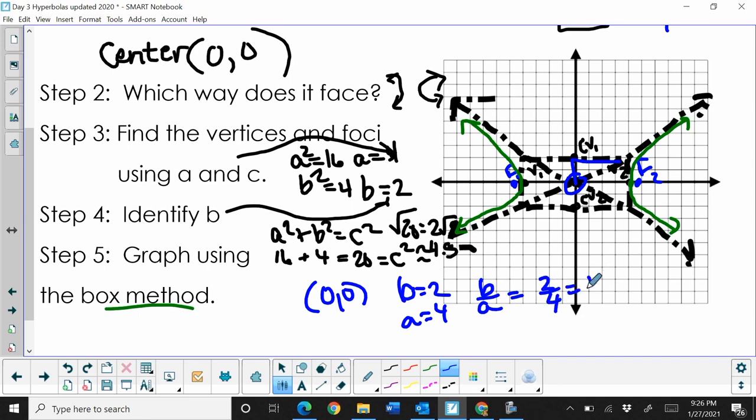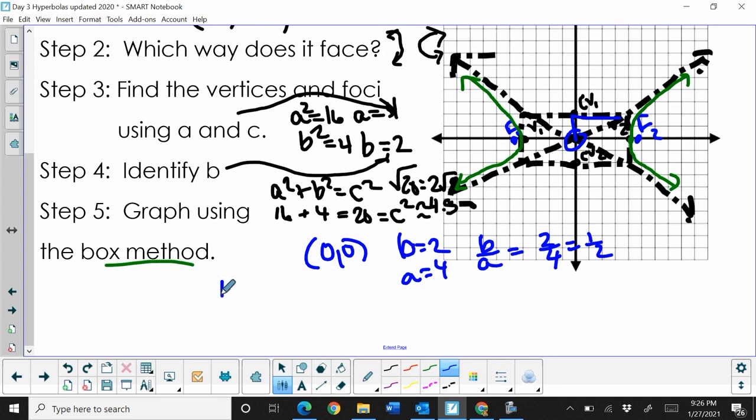That's the slope of this asymptote. The other one has a negative slope, so the slopes of the asymptotes are ±1/2. I'm going to plug that in using the point-slope formula and the origin, since both asymptotes contain that point. It's y - 0 = ±1/2(x - 0).